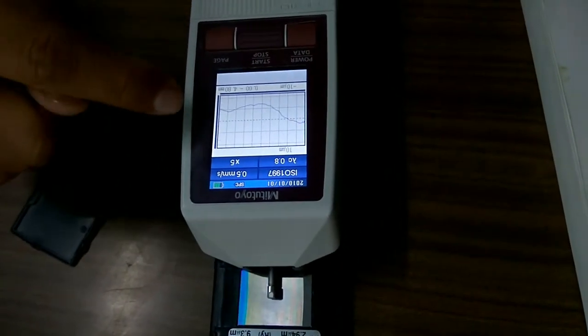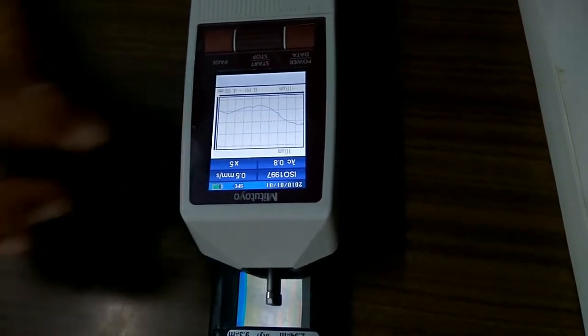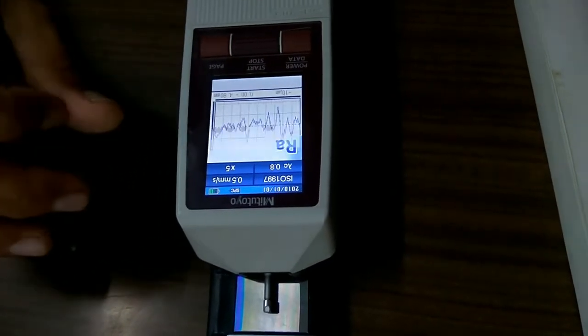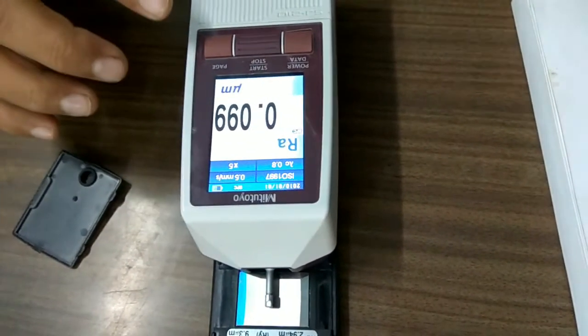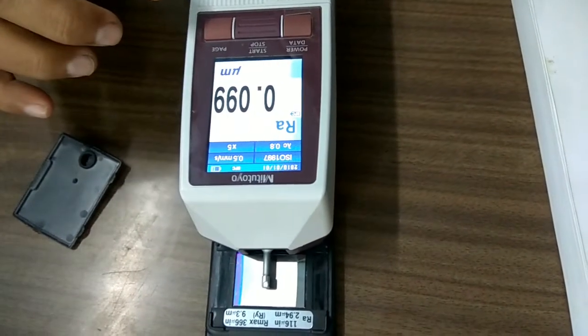You can take the printout also. You can process the data, analyze the data and analyze the result from the surface. Now here it is 0.099 array value having microns.